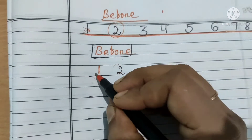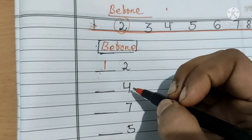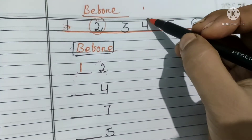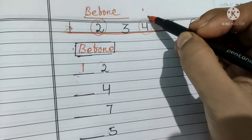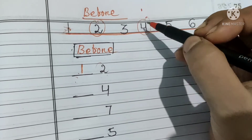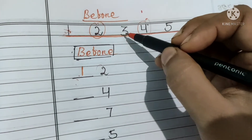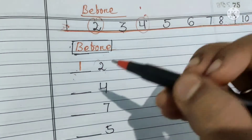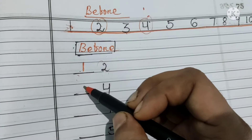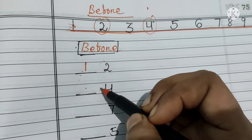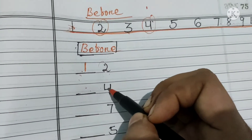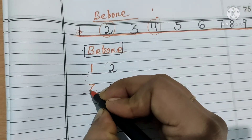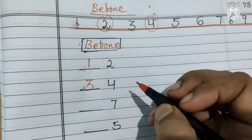2 se pahle number 1 aata hai. Abhi aya number 4. Abhi number line mein dekhenge kahan pe number 4 hai. To number 4 se pahle konsa number aata hai? Number 3. So haam idhar kya likhenge? Number 3. What comes before number 4? Number 3. Haam idhar number 3 likhenge.